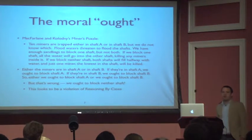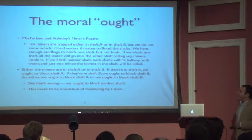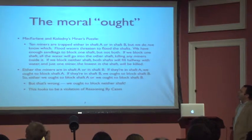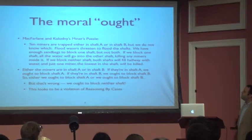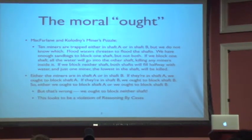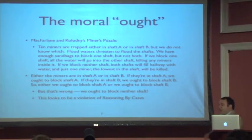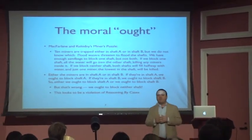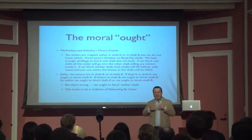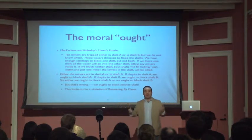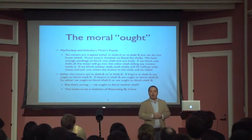Here's another case that uses a moral notion — a notion of a moral ought or moral should. This comes from a paper by McFarlane and Kolodny in 2010. Ten miners are trapped in either shaft A or shaft B, but we do not know which. Flood waters threaten to flood the shafts. We have enough sandbags to block one shaft but not both. If we block one shaft, all the water will go into the other shaft, killing any miners inside it. If we block neither shaft, both shafts will fill halfway with water and just one miner — the lowest in the shaft — will be killed. If we guess right, we save all ten; if we guess wrong, all ten die. If we do nothing, only one dies no matter which shaft they're in. The intuitive thought is that what you ought to do is nothing — you ought not gamble with ten lives. You ought to cut your losses and allow just one person to die, rather than take a 50-50 gamble on possibly causing ten people to die.